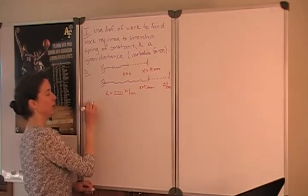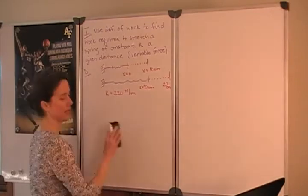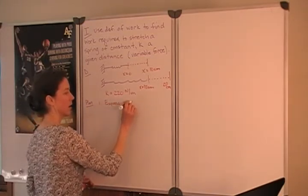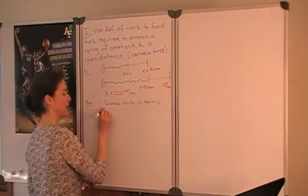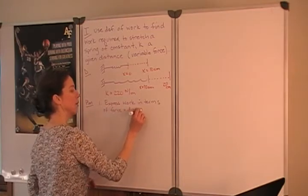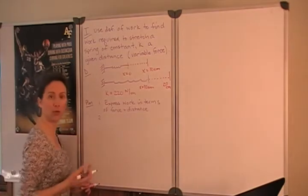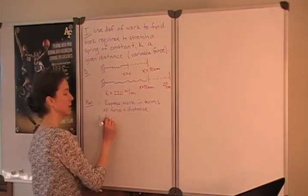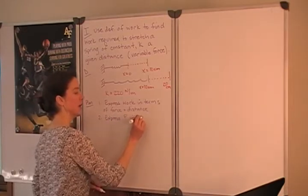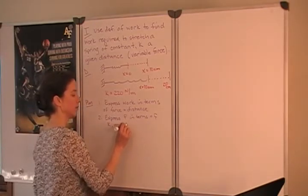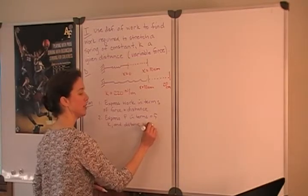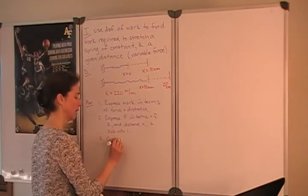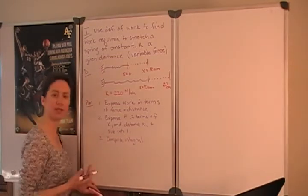As we make a plan for evaluating we will first check our units and then we will begin working with the expression of work. So we want to express work in terms of force and distance. But remember here that our force is variable so that is an integral expression of work. We also are not given the force but we are given enough information to compute that force. So we want to express the force in the spring in terms of the spring constant and the distance. Then we can substitute into our first equation. Then we'll be equipped to go ahead and compute the integral for work.